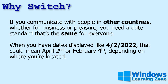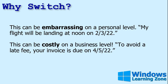When you have dates displayed like 4/2/2022, that could mean April 2nd or February 4th depending on where you're located. This can be embarrassing on a personal level — like 'my flight will be landing at noon on 2/3/22' sent in a text or email — or it can be costly on a business level, like 'to avoid a late fee your invoice is due on 4/5/22.' Is that April 5th or May 4th?